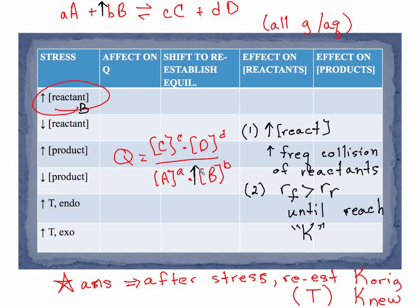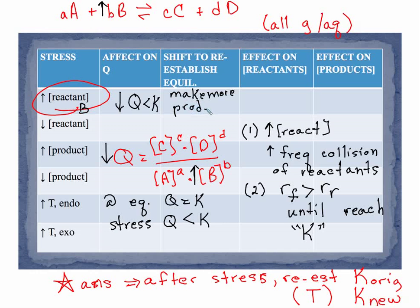In terms of Q, if we increase the concentration of B we decrease Q. Now at equilibrium Q is equal to K. When we've done our stress, the stress causes Q to be less than K. When Q is less than K, this is going to cause a decrease, it's going to make Q less than K, and that means we're going to shift to make more product.